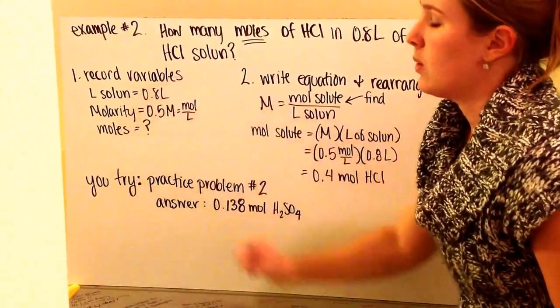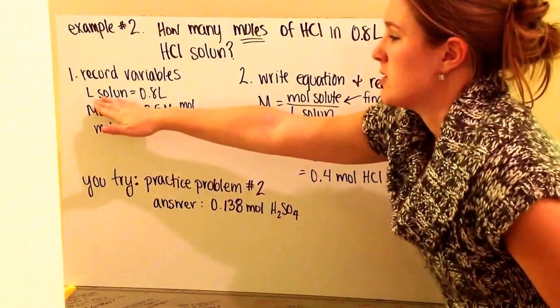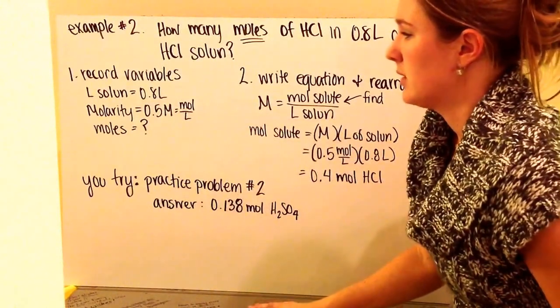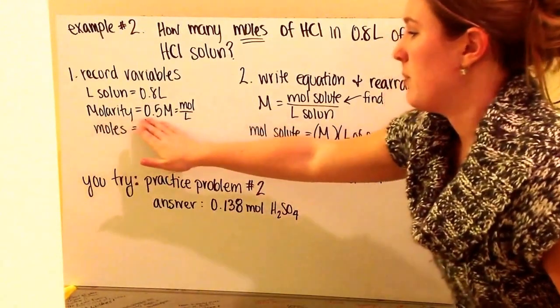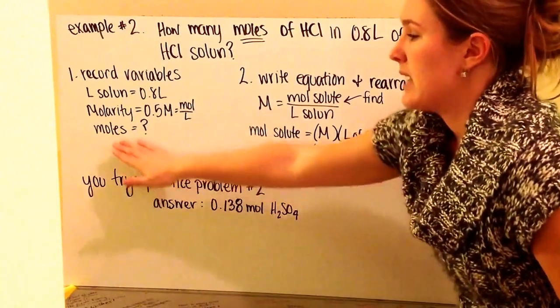First thing we want to do is record all of our variables, just like always. We're given a volume of 0.8 liters. We're given a molarity of 0.5 molar, or moles per liter, and we're asked to find the moles.